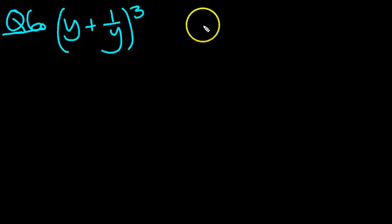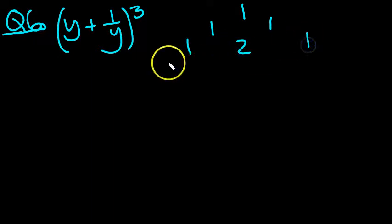OK, number 6 then, y plus 1 over y cubed. So we've got power 3. So let's go down to the third row. Here it is here.